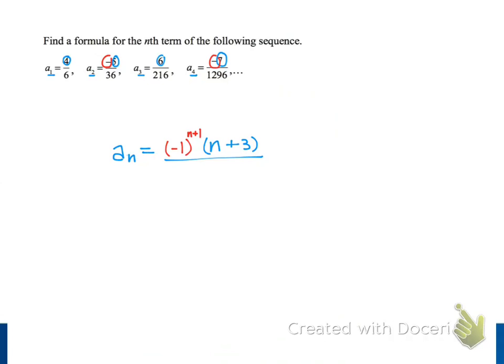The pattern in the denominators of our terms may be harder to see at first glance, but it turns out to be quite nice. Our first denominator is 6, which we can write as 6 to the first power, and we notice that the index of our term is 1. Our second denominator is 36, which we usually recognize as 6 squared, and our index n is equal to 2.